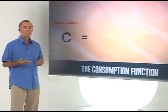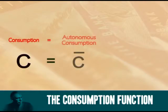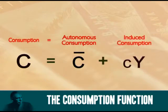Consumption spending, C, is made up of two types of spending: what we call autonomous consumption and induced consumption.